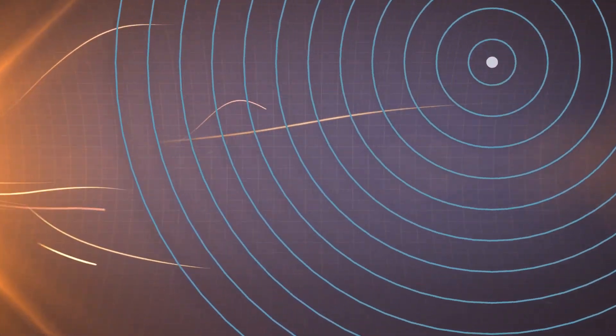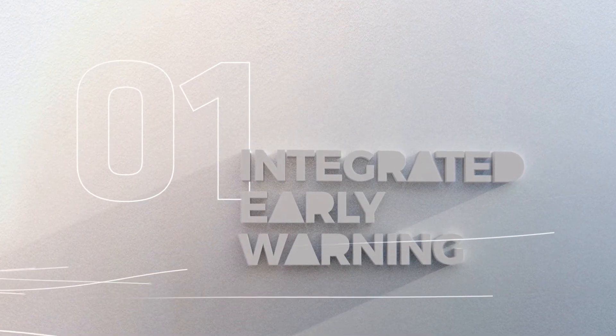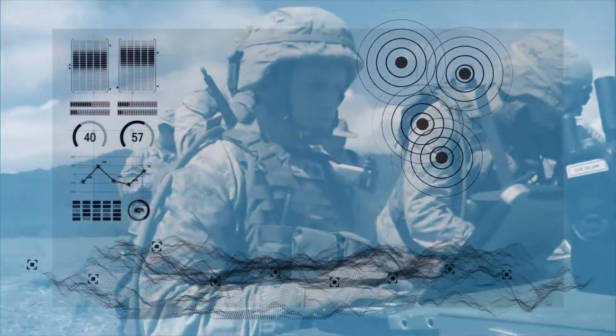DTRA CB has three strategic priorities. Integrated early warning merges sensors, big data, and machine learning to give commanders improved awareness and decision-making time on the battlefield.